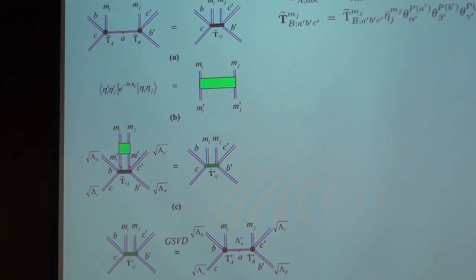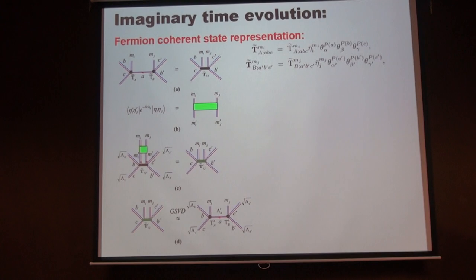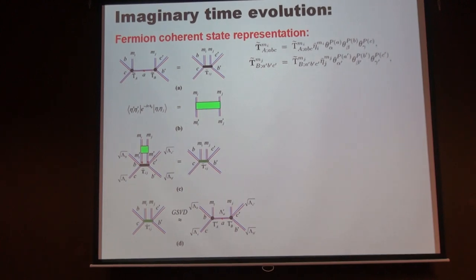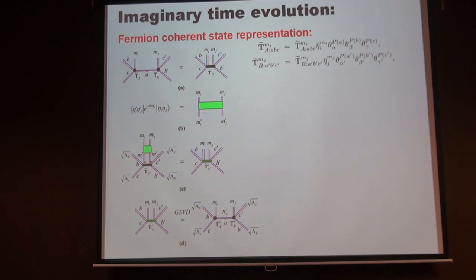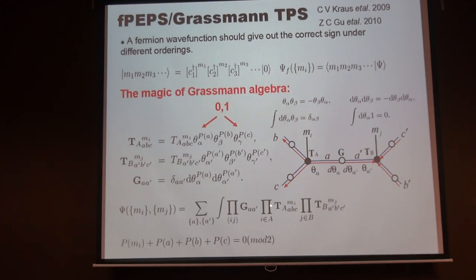This imaginary time evolution idea is also related to the path integral picture of the fermion system — you can think of it as an imaginary-time path integral. To perform this technique, we go to the coherent state representation: we replace the fermion operator c† with a Grassmann variable. The wave function can be defined on any Fock basis, and the Fock basis ordering corresponds to the ordering of these Grassmann variables.